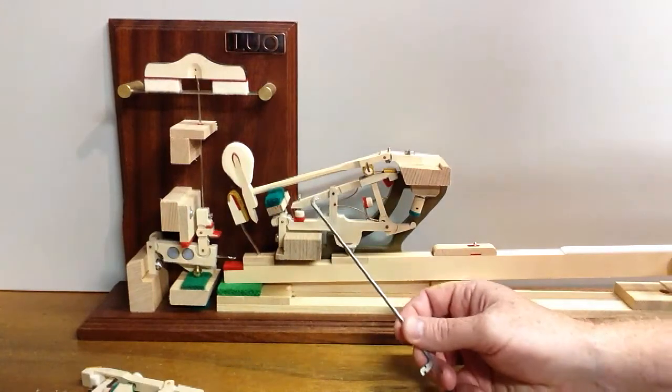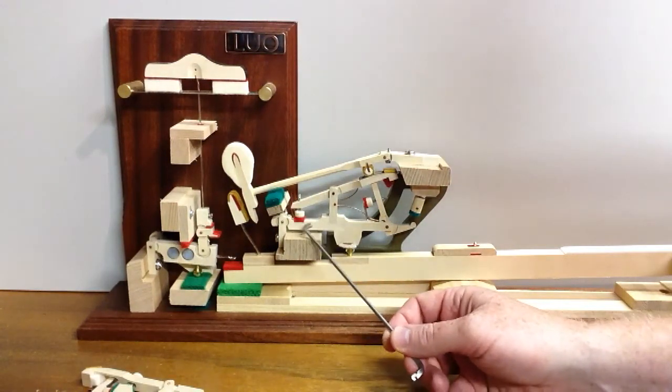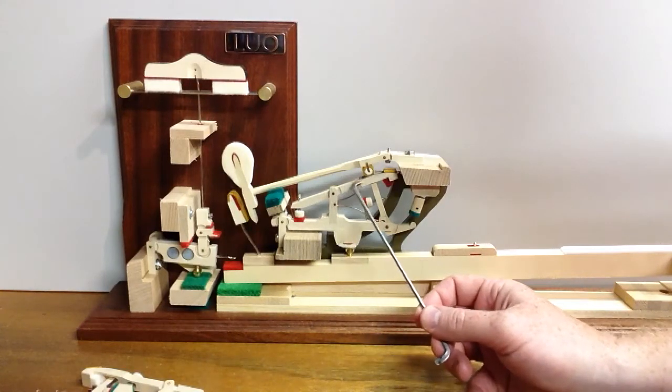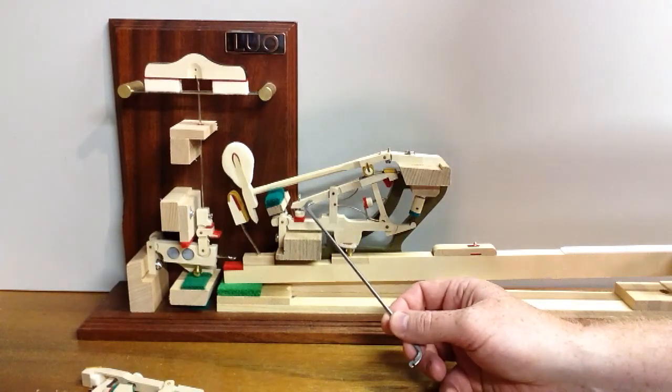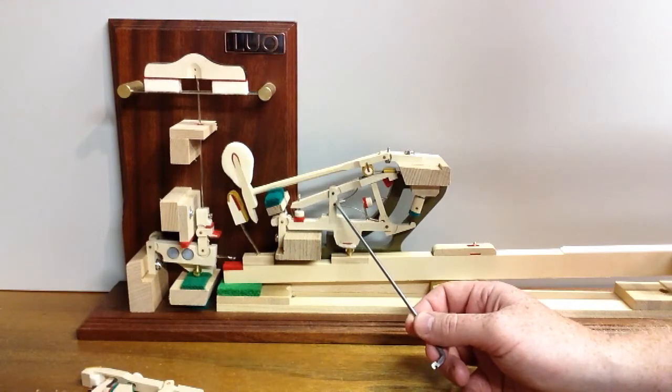Over here we have the whippen, this whole piece right here is the whippen of the piano. Here we've got the repetition lever which is this piece right here, and then right here is the repetition spring.